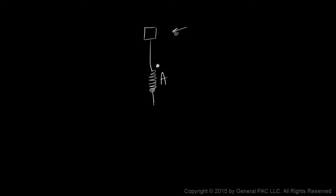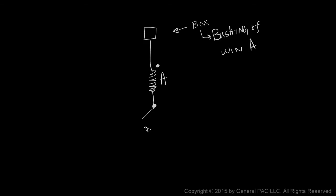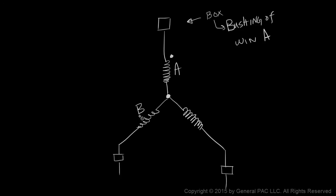Let's begin by illustrating winding A. The polarity side of winding A is indicated by a round dot, and this small box here indicates the bushing of winding A. Similarly, we'll illustrate winding B and winding C. In this illustration, we're not going to cover secondary windings.